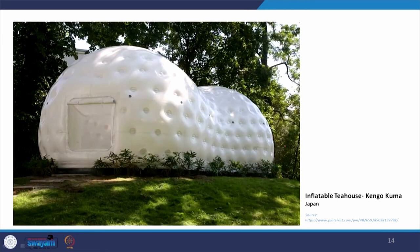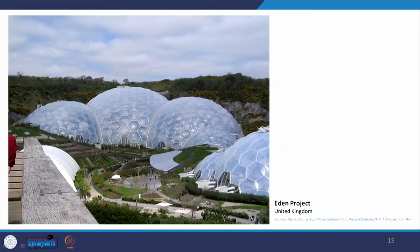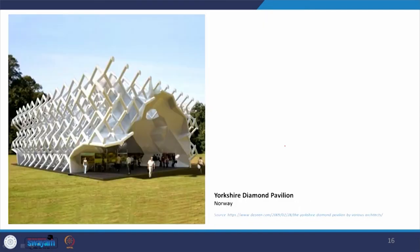Coming to examples: this is an inflatable tree house where the membrane is formed in this way. Here is the Eden Project, made for a greenhouse and botanical garden purpose. The Yorkshire Diamond Pavilion features members that are actually filled with air — this is an air-inflated example where the structural members are filled with air to give form to the structure.